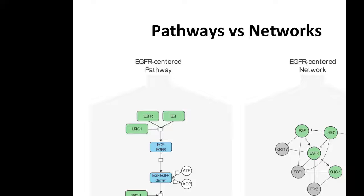Typically, pathways are represented with a series of inputs, reactions, and outputs, with some modulatory factors. What we're looking at here is the simplified version of the epidermal growth factor receptor signaling pathway, which starts with EGFR and its ligand EGF forming a complex. The complex is active, converts ATP into ADP, and ultimately leads to increased cell growth through a number of regulatory interactions.